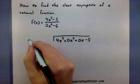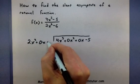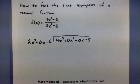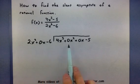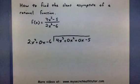I'm going to divide this by 2x squared plus 0x minus 6. You'll notice that I'm putting in some 0 placeholders for some of my missing powers of x. This is a good idea just to make sure that everything lines up correctly.